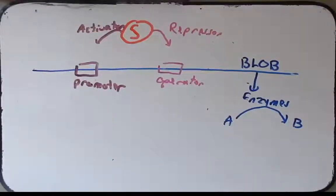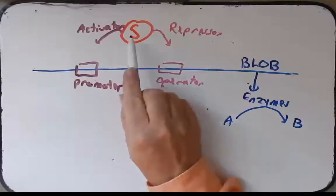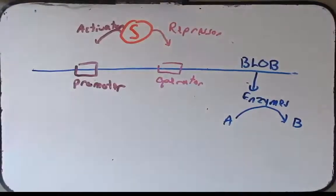So the first part of the question asks, is it a repressor or is it an activator? Based on what I've told you so far, we don't know. But a good way to figure this out is to ask, what would happen if we mutated S?